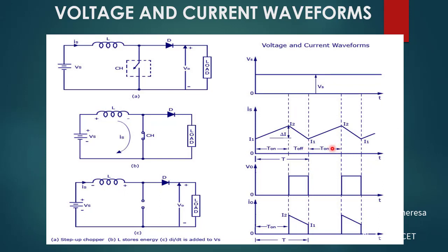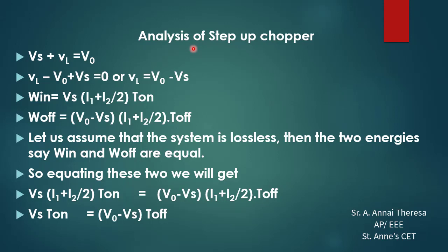During the next ON period, when the switch is closed again, the inductor charges — no output voltage and no output current. When the switch is off again, the inductor discharges its current, and we get output voltage and output current. This repeated switching gives us a variable, chopped voltage. A chopper is a device used for frequent ON and OFF switching of a semiconductor device, by which we can vary the output voltage. We can analyze the step up chopper by applying KVL in the circuit.